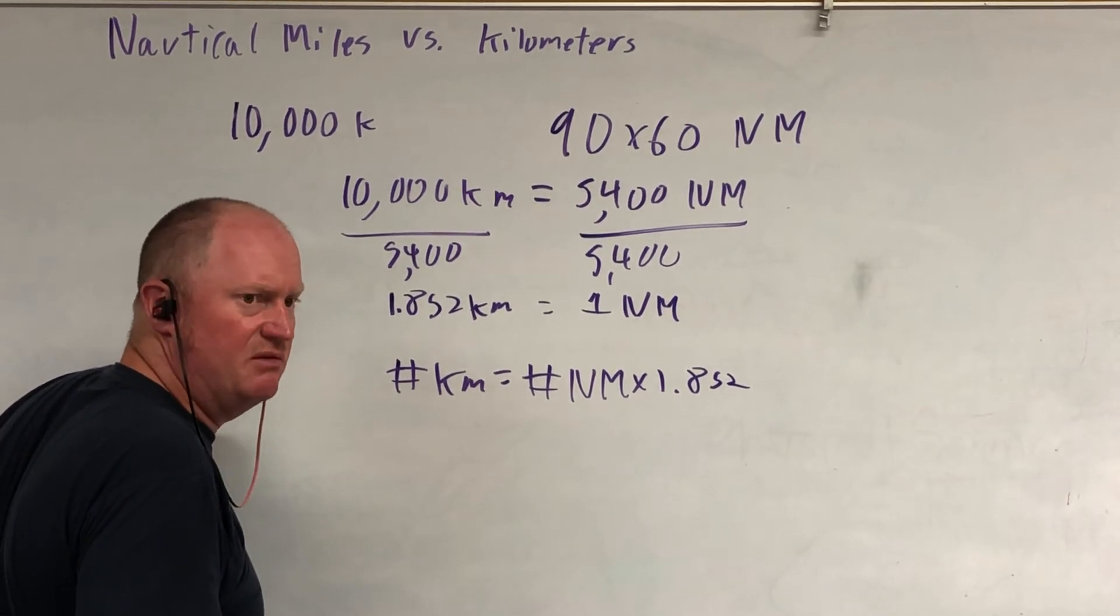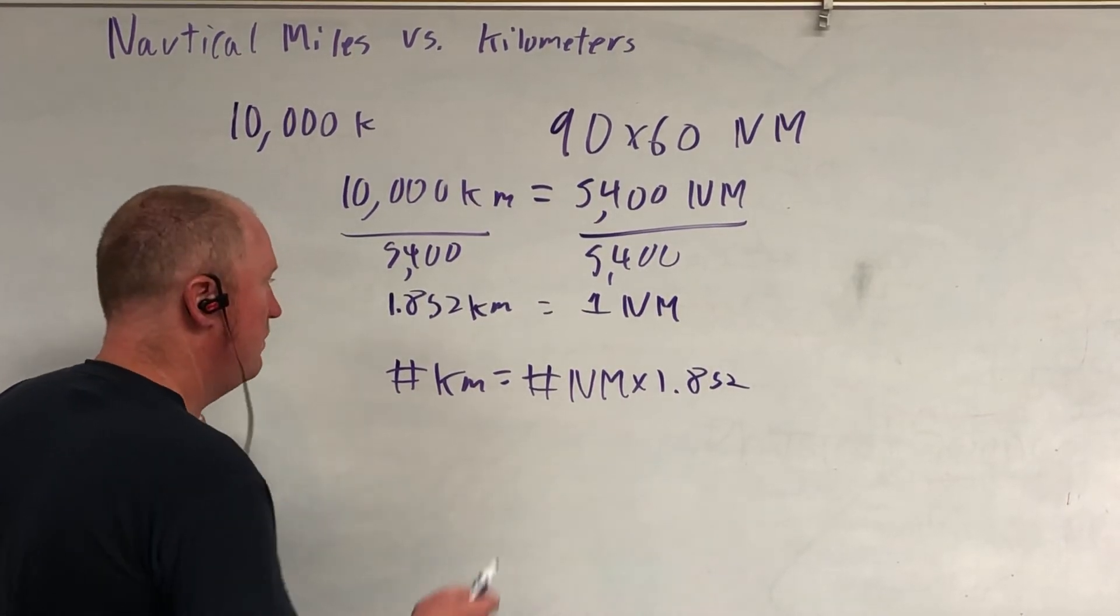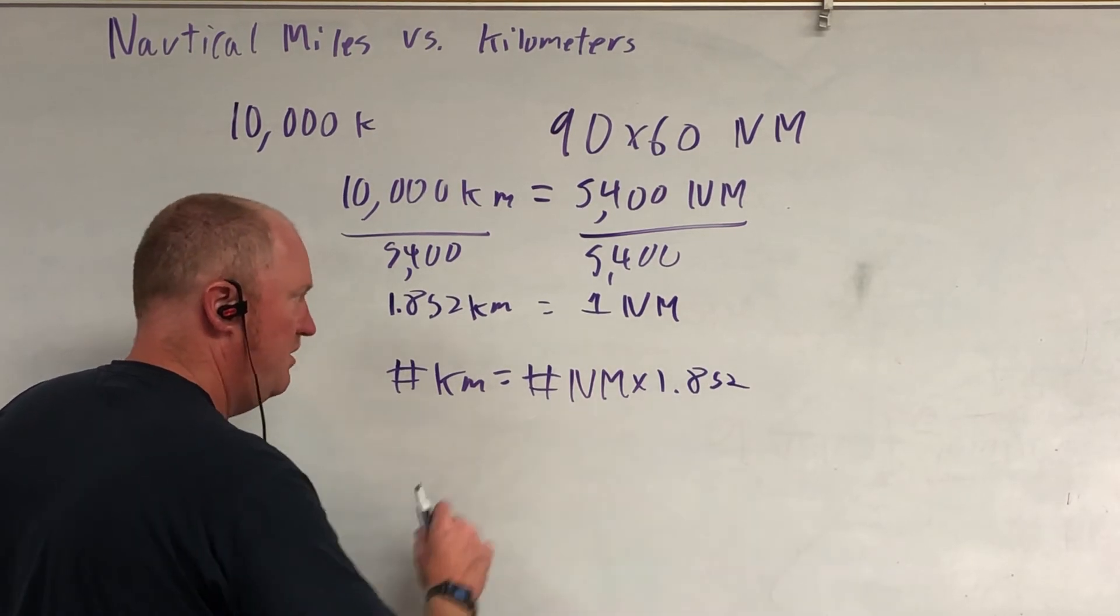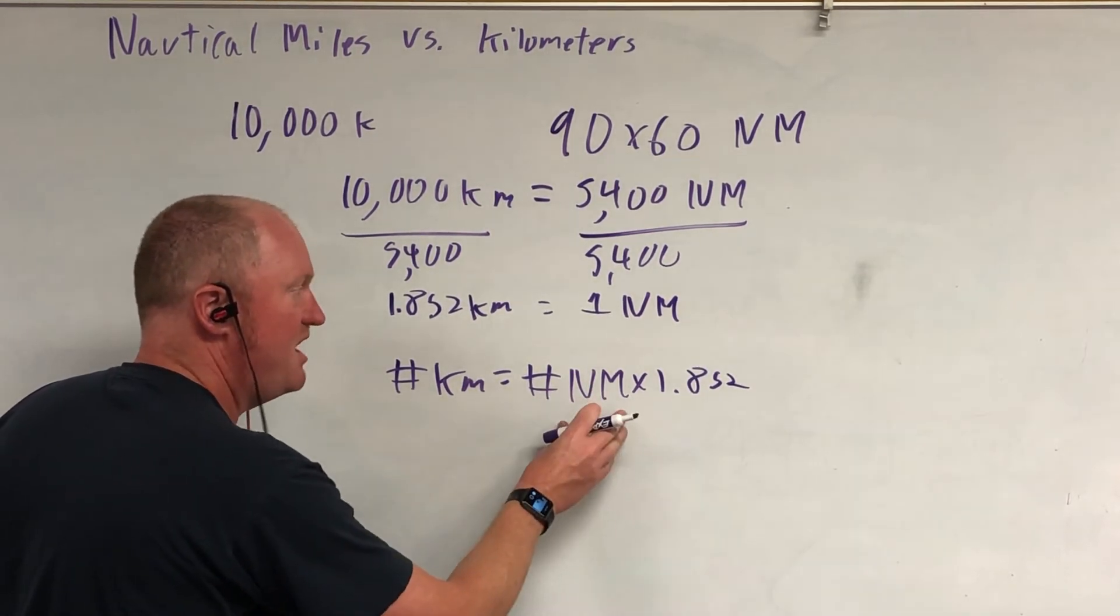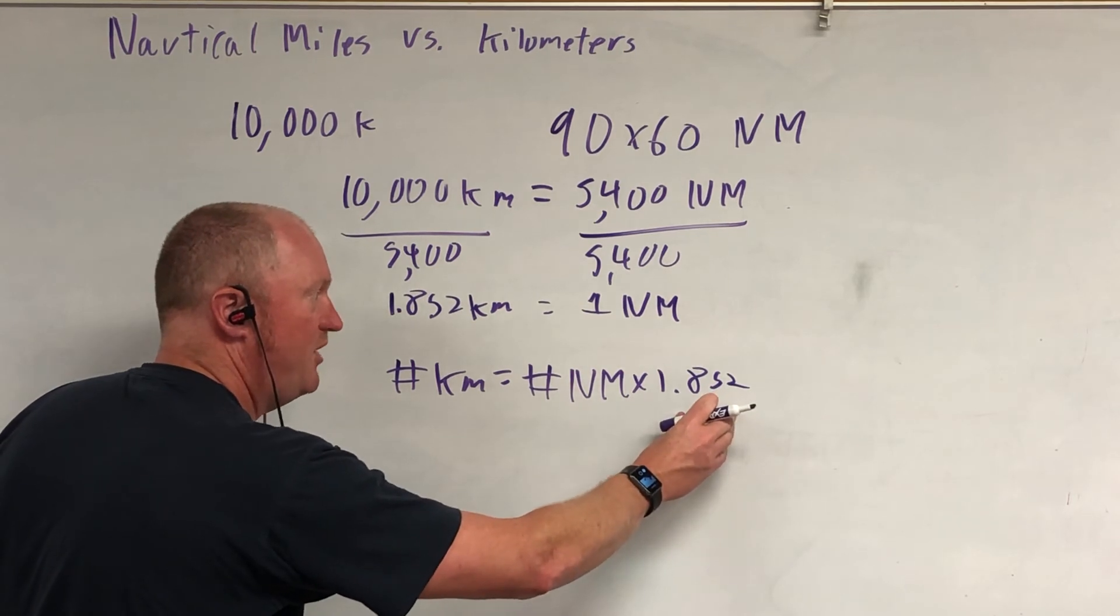But at some point you've got to say, hey, it must be reasonable. So there you go. The number of kilometers is equal to the number of nautical miles times 1.852.